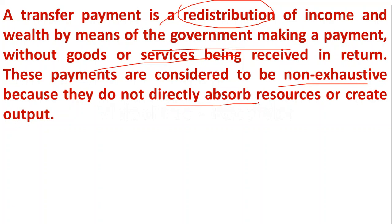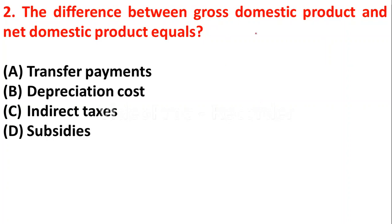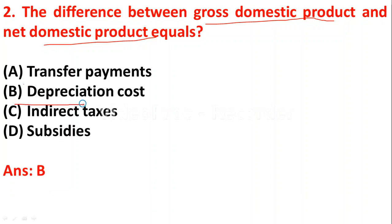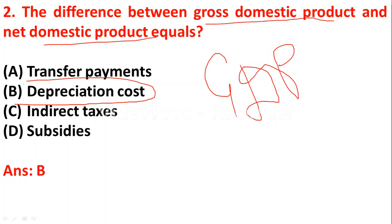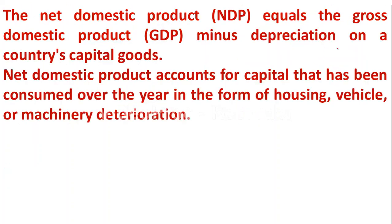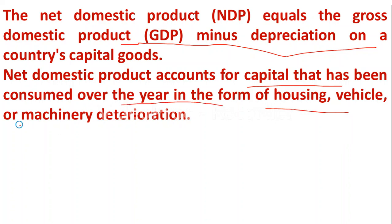The next question: the difference between Gross Domestic Product and Net Domestic Product equals — A) transfer payments, B) depreciation cost, C) indirect taxes, D) subsidies. The answer is B — depreciation cost, because NDP = GDP minus depreciation cost. Net Domestic Product equals Gross Domestic Product minus depreciation on a country's capital goods. Net Domestic Product accounts for capital consumed over the year in the form of housing, vehicle, or machinery deterioration.